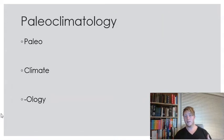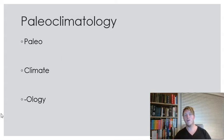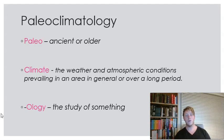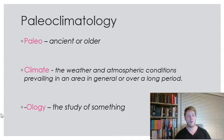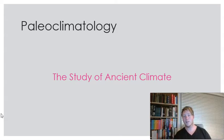First of all, I just want to break down a bit of key vocabulary - the key term here: paleoclimatology. We're combining three words: paleo, climate, and ology. You might've heard that suffix in biology, physiology, ecology. Paleo means ancient or old. Climate refers to the weather and atmospheric conditions over a long period of time. And ology means the study of something. So if we combine all those words together, it means the study of ancient climate.